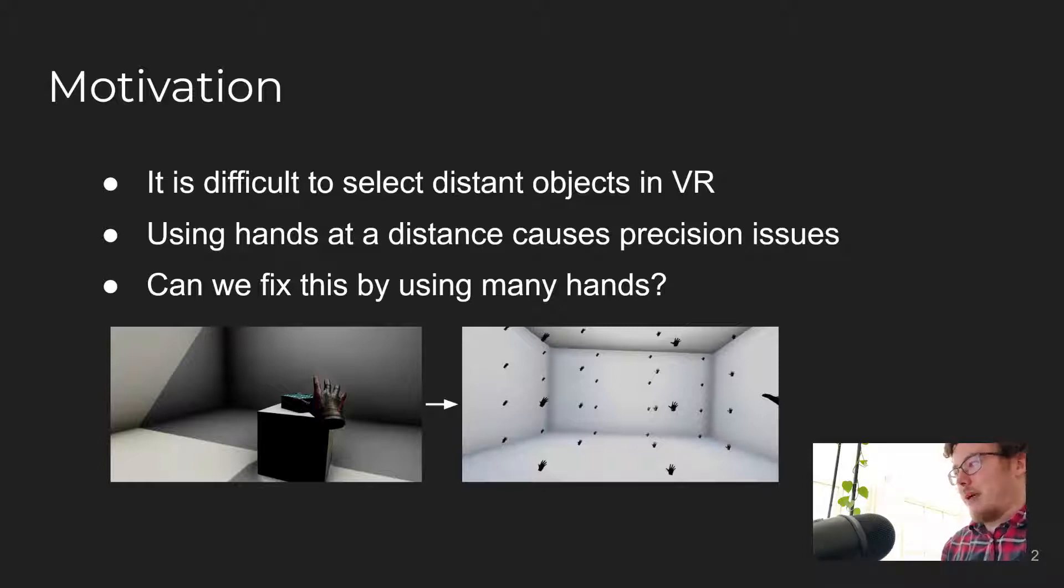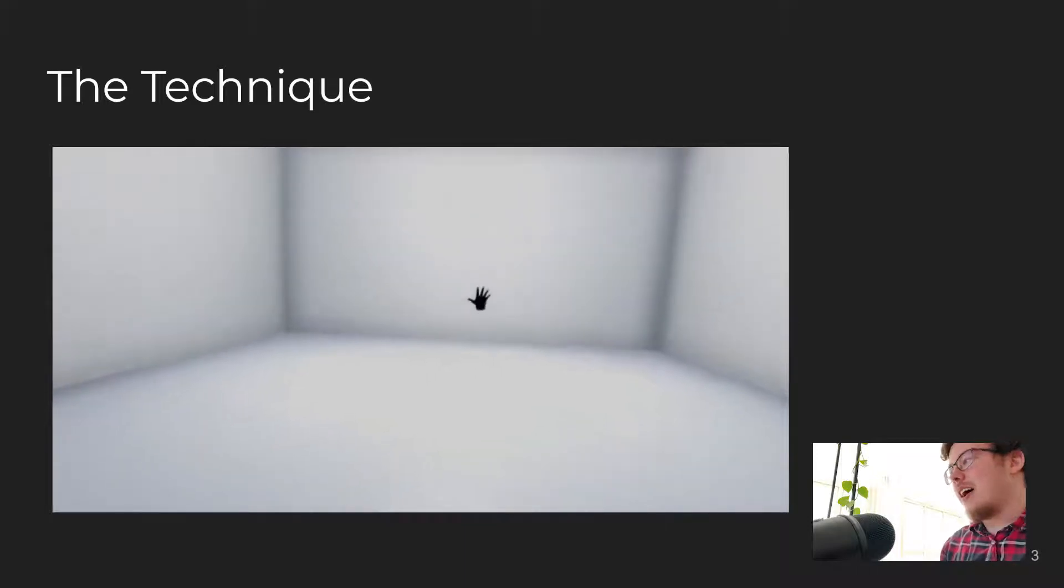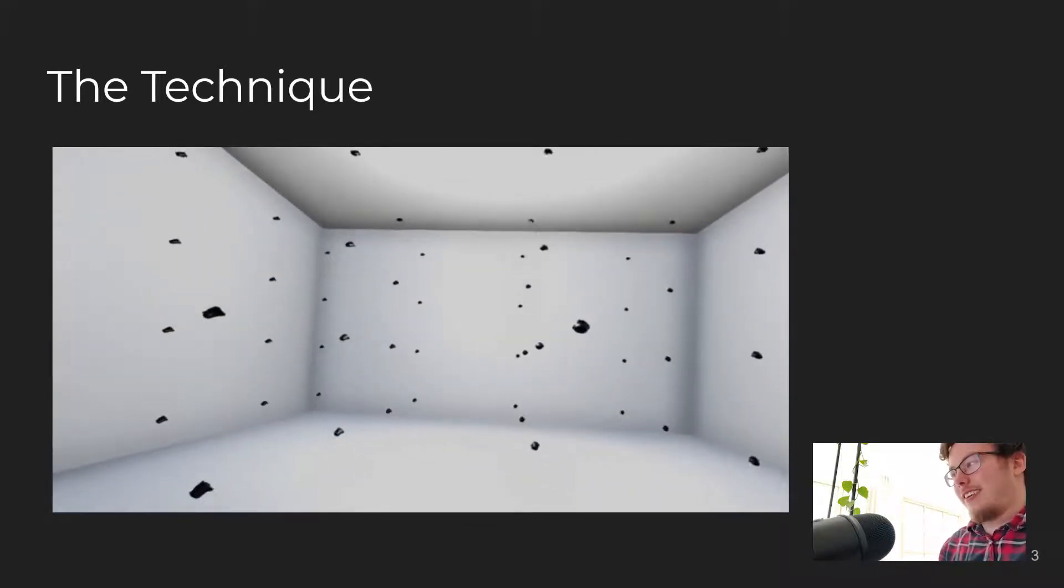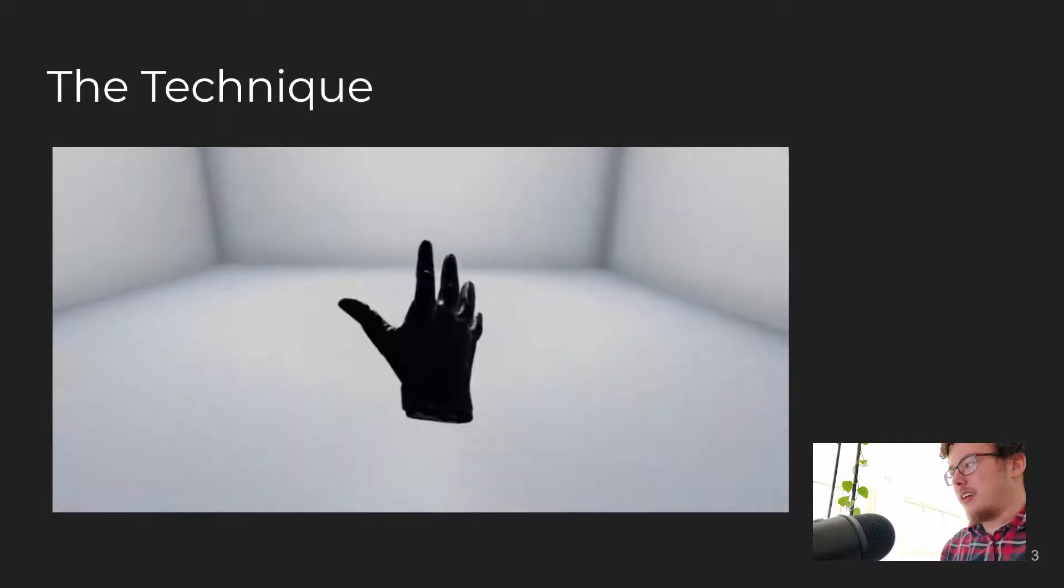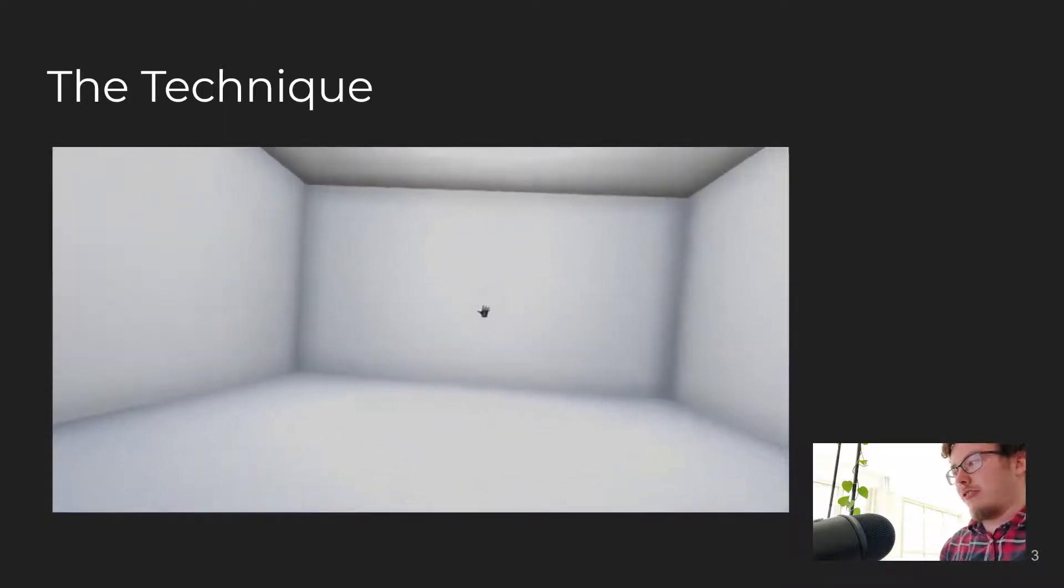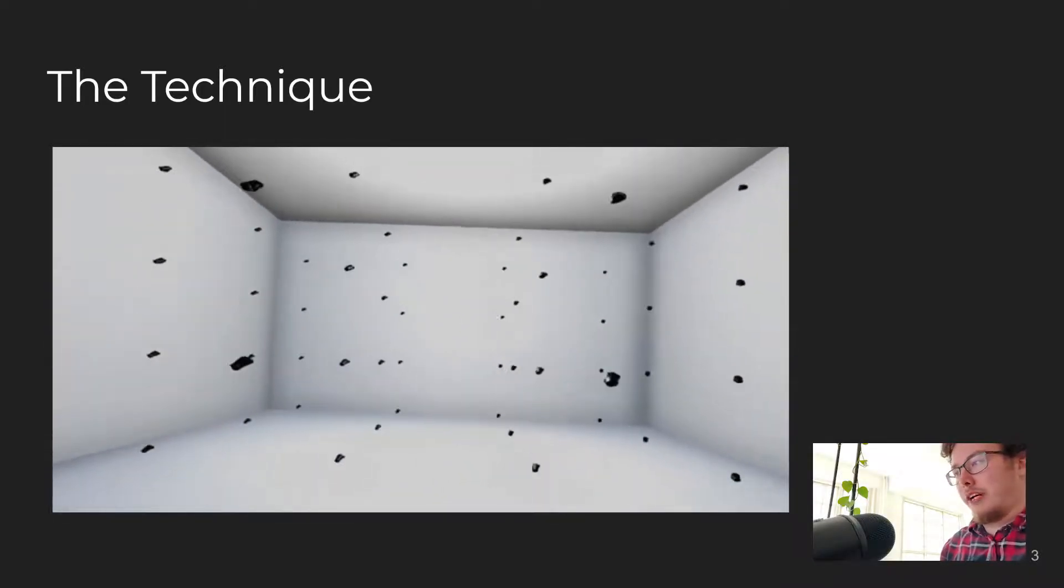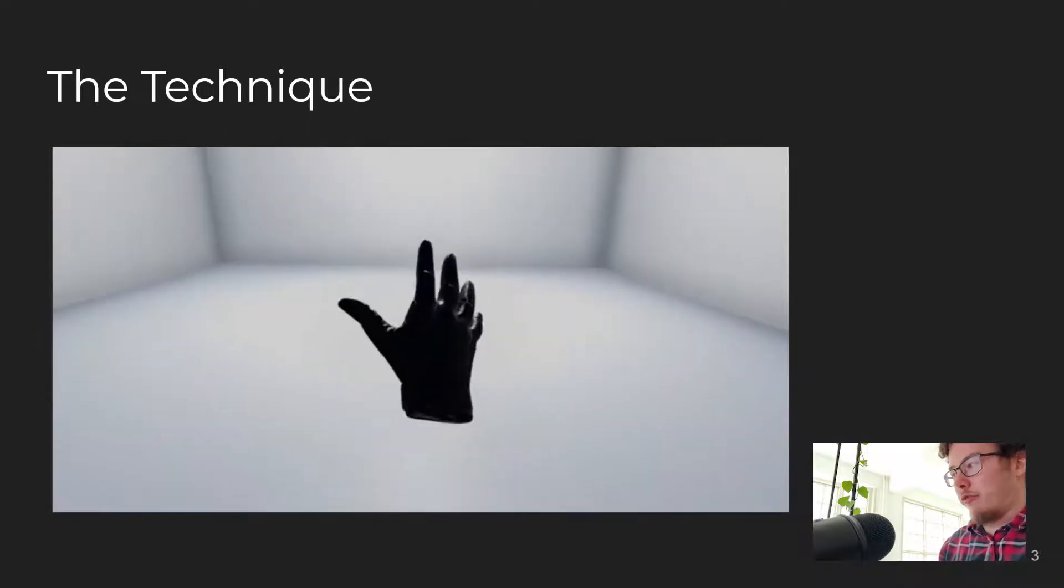This leads us to Ninja Hands, which maps the movement of a single physical hand to many virtual hands. The key benefit of Ninja Hands is that by adding more distributed hands to an environment, we reduce the shortest distance from a hand to any given point in the environment, meaning that the user has to move less to reach there.